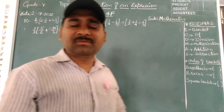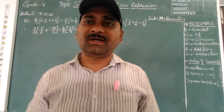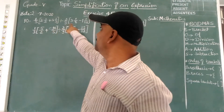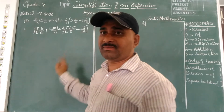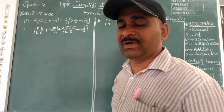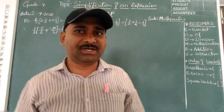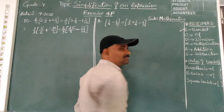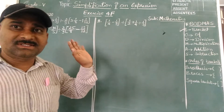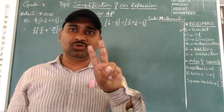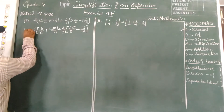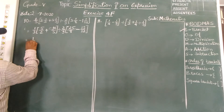Two mixed fractions from the first bracket and two from the second bracket are converted to improper fractions. After converting, we go to BODMAS. The first operation is brackets — two brackets are given, so we simplify both brackets first.